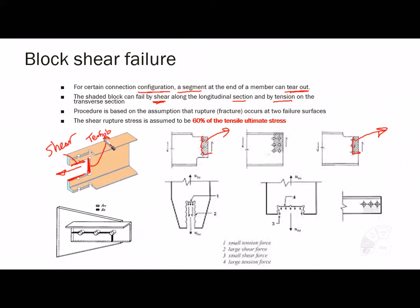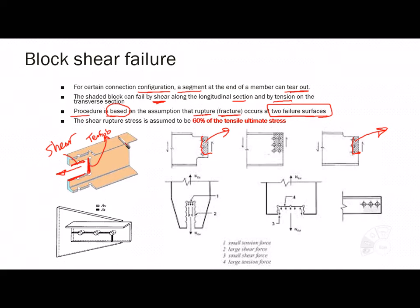The AISC block shear procedure is based on the assumption that rupture (fracture) occurs simultaneously at two failure surfaces. The shear rupture stress is assumed to be 60% of the tensile ultimate stress, so we use 0.6Fu for shear rupture.